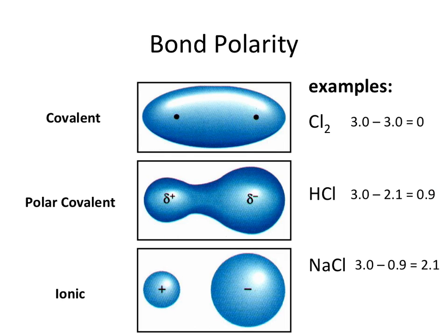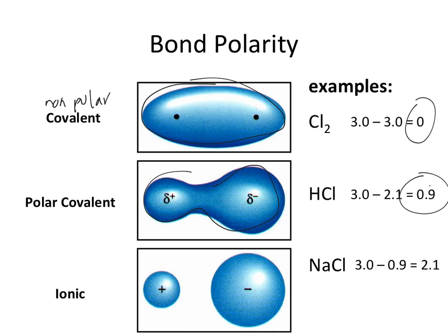Looking at the distribution of electron density: in nonpolar covalent bonding, electron density is shared evenly across the two atoms. In polar covalent bonds, where the electronegativity difference is greater than zero, we have partially positive and partially negative portions. In ionic compounds, we completely transfer electron density, giving a fully negative and fully positive ion. Understanding these differences and which compounds form polar or nonpolar covalent bonds is going to be very important for understanding intermolecular forces, melting points, and things of that sort.